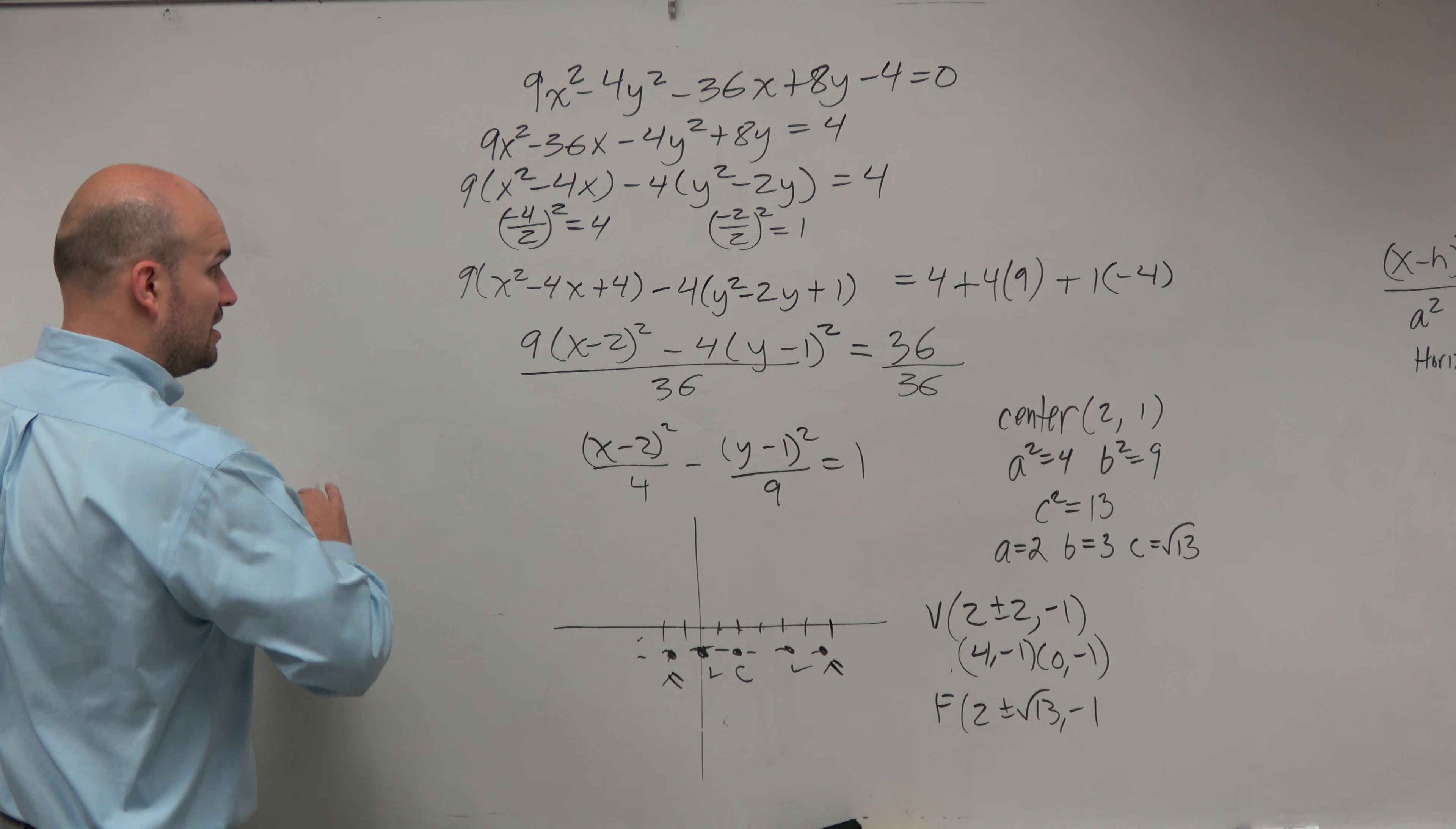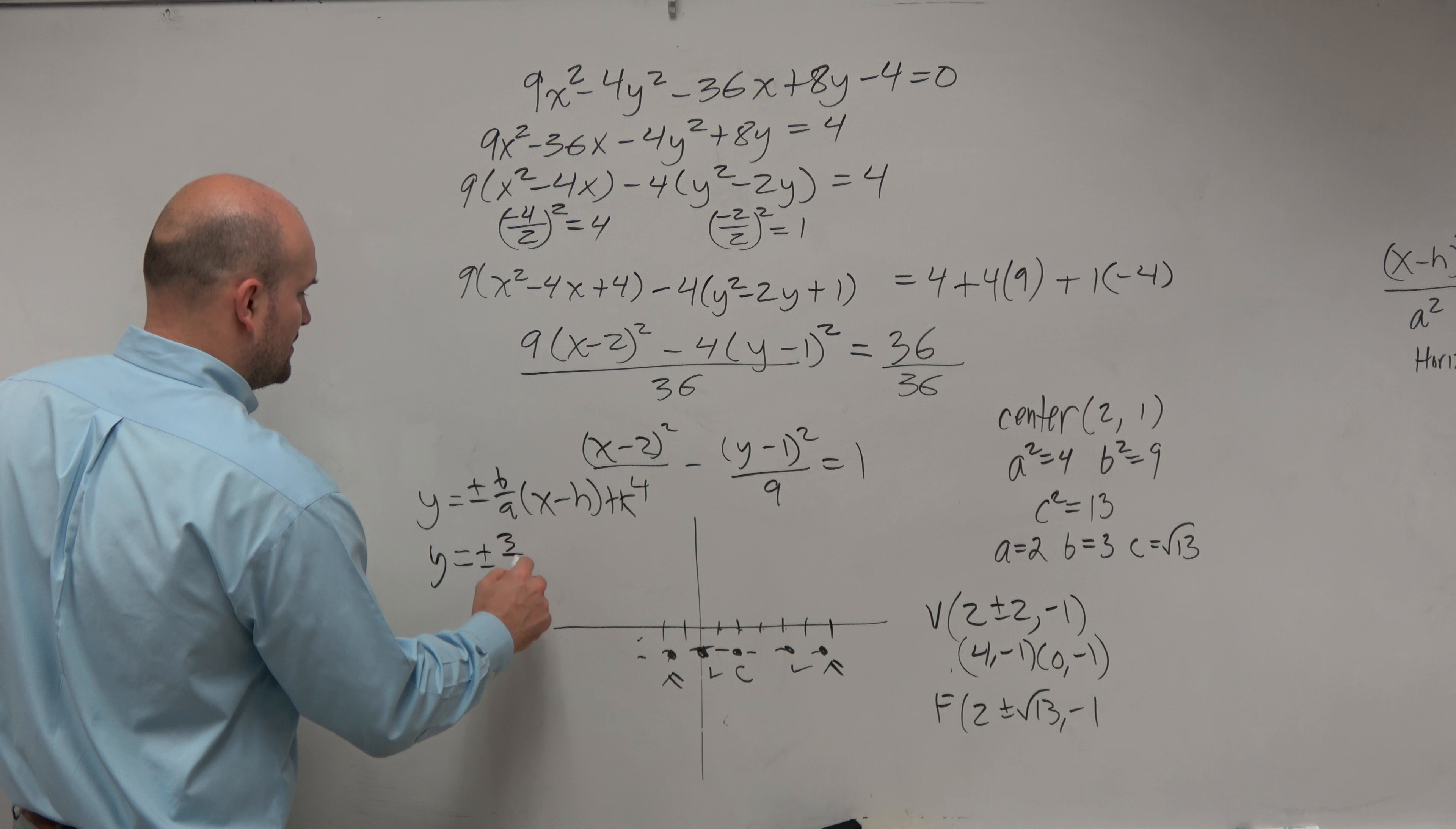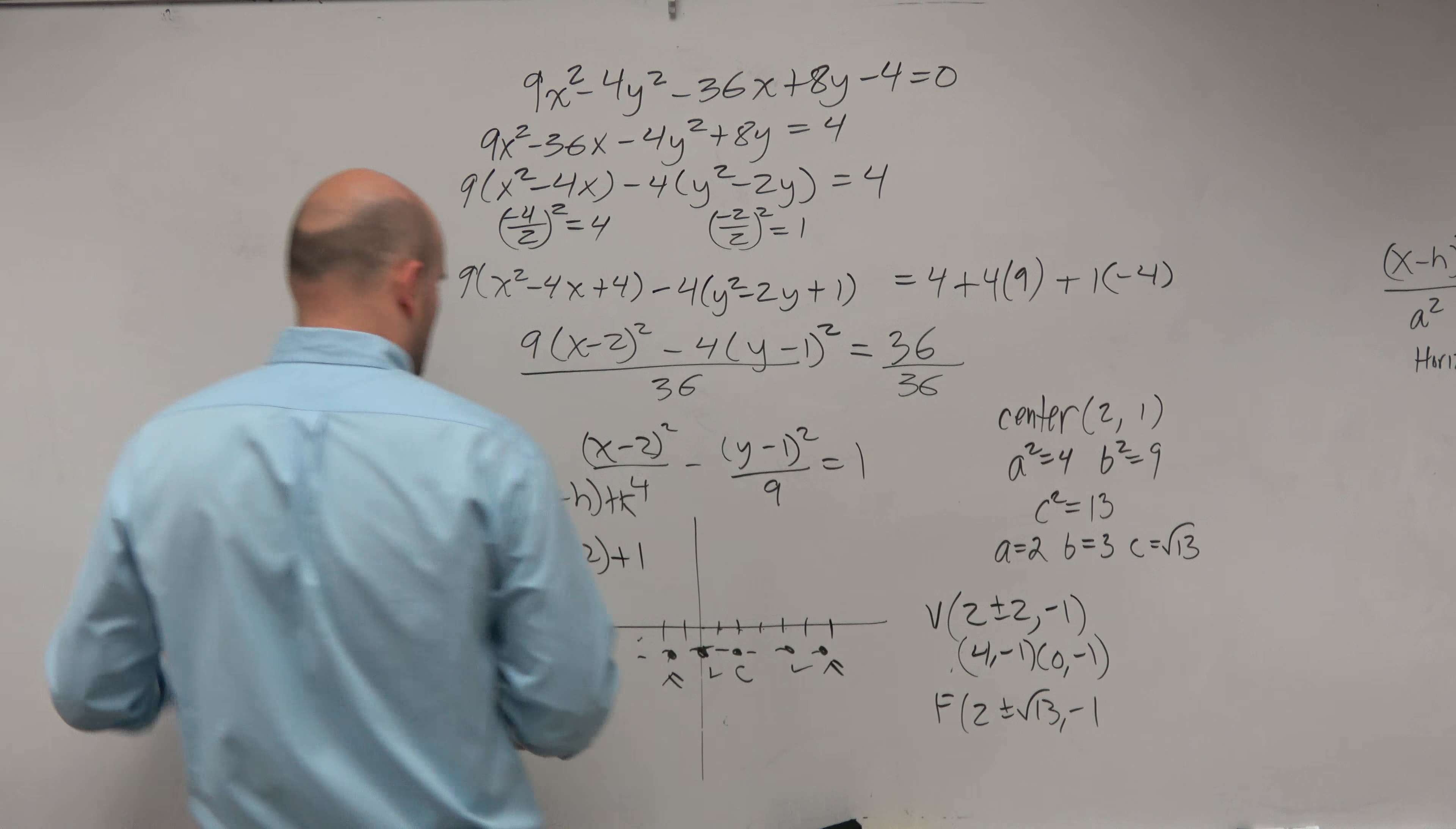Then let's do the foci. Now the foci I'm not going to simplify. That's going to be 2 plus or minus square root of 13, negative 1. And again, you guys could think of square root of 13 as somewhere in between 3 and 4. So 1, 2, 3, 4. Foci. 1, 2, 3, 4. Foci.